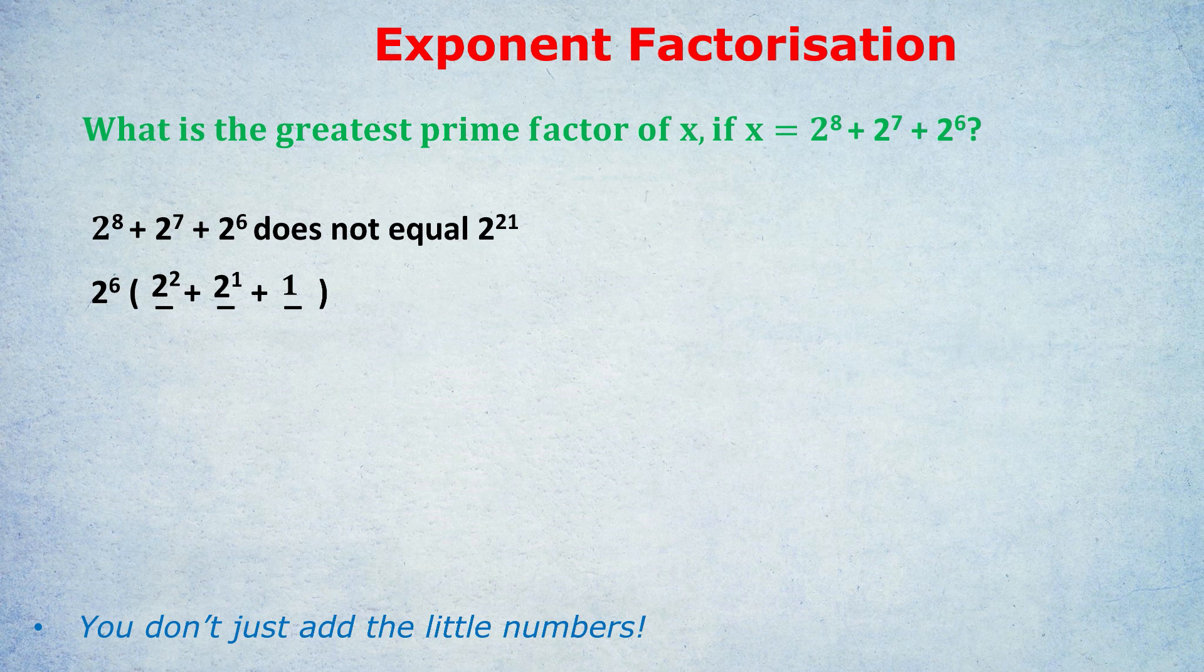This next step is much easier. Step 2, and you can write this down, is you calculate the value of the bracket. You see those numbers inside the bracket, 2 to the 2 plus 2 to the 1 plus 1. You need to calculate what they actually are as numbers and add them up. 2 to the 2 is 4, 2 to the 1 is 2, and 1 is 1.